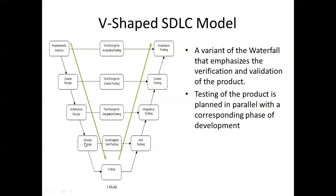Architecture design and module design may look similar but are not. Architecture design identifies what modules exist and how they communicate with each other. Module design goes inside each and every module and defines the functionalities and how they work — we can also call this low-level design. Once module design is completed, the testing team writes the test design for unit testing.